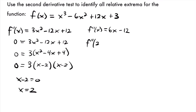f''(2) = 6(2) - 12 = 12 - 12 = 0. If you remember from when we looked at the definition of the second derivative test, we said that if the value on the second derivative for that critical value is zero, our second derivative test fails, and we have to go back and use the first derivative test.